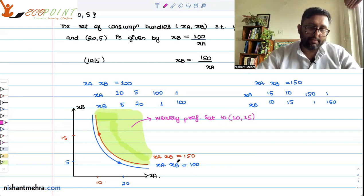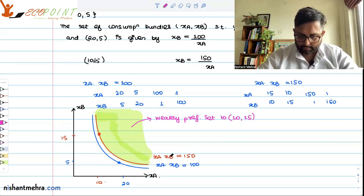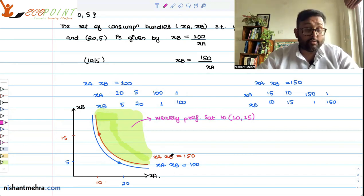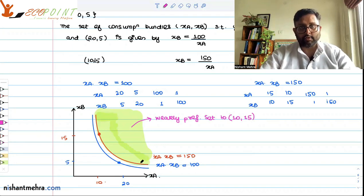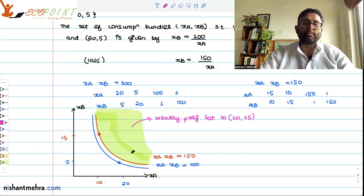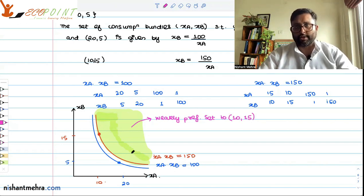When you write about the weakly preferred set, it includes all those points on which you are indifferent, giving the same utility. For the strictly preferred set, you do not include points on the indifference curve itself, since indifference means the same utility. The strictly preferred set gives you strictly more utility than (10, 15).